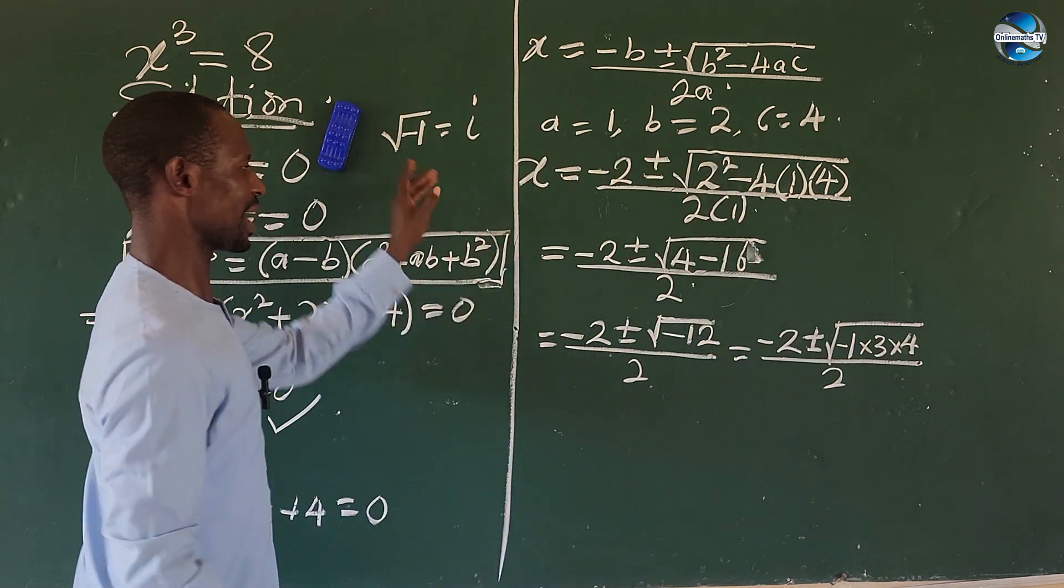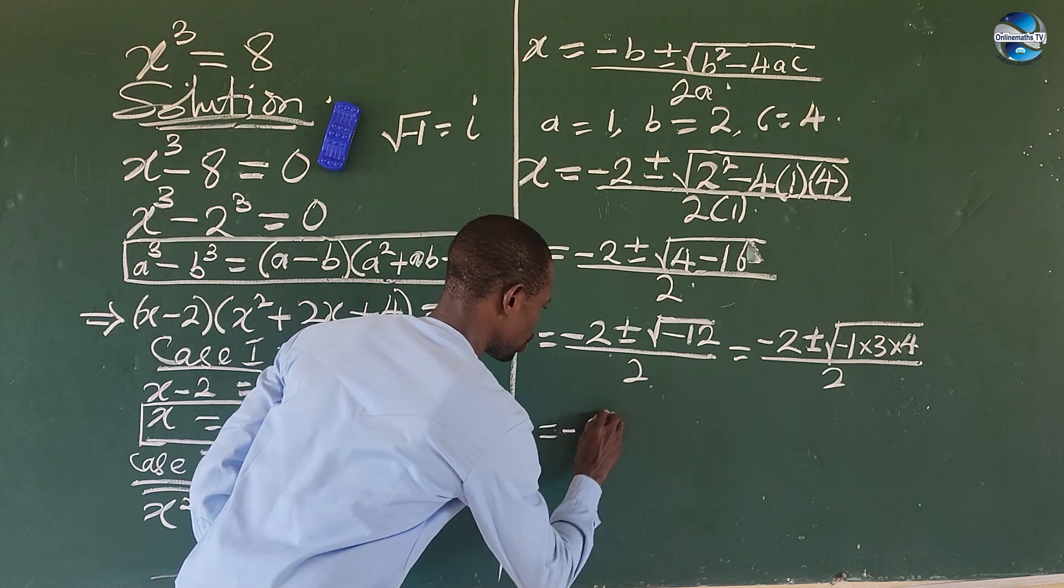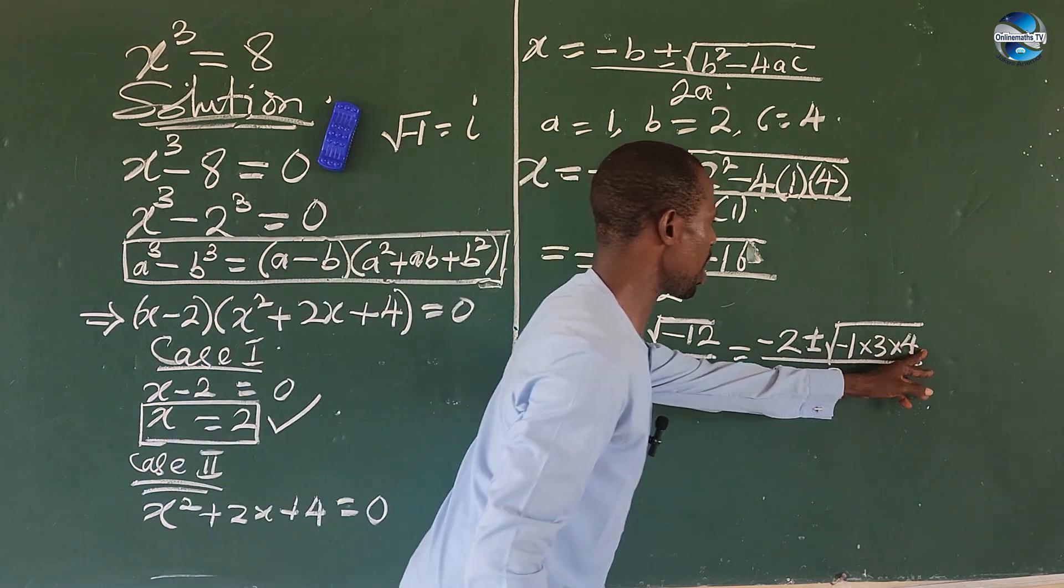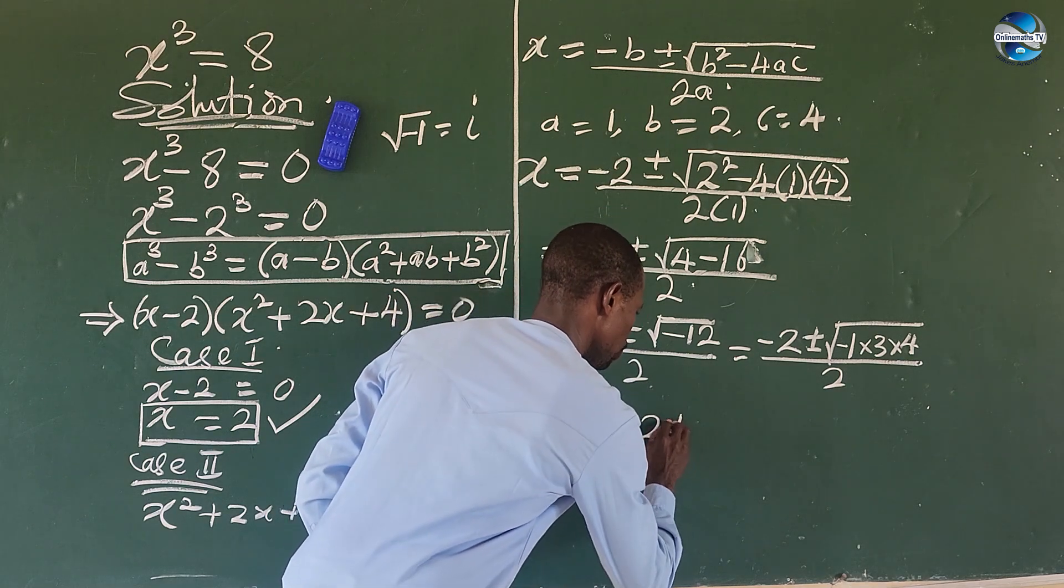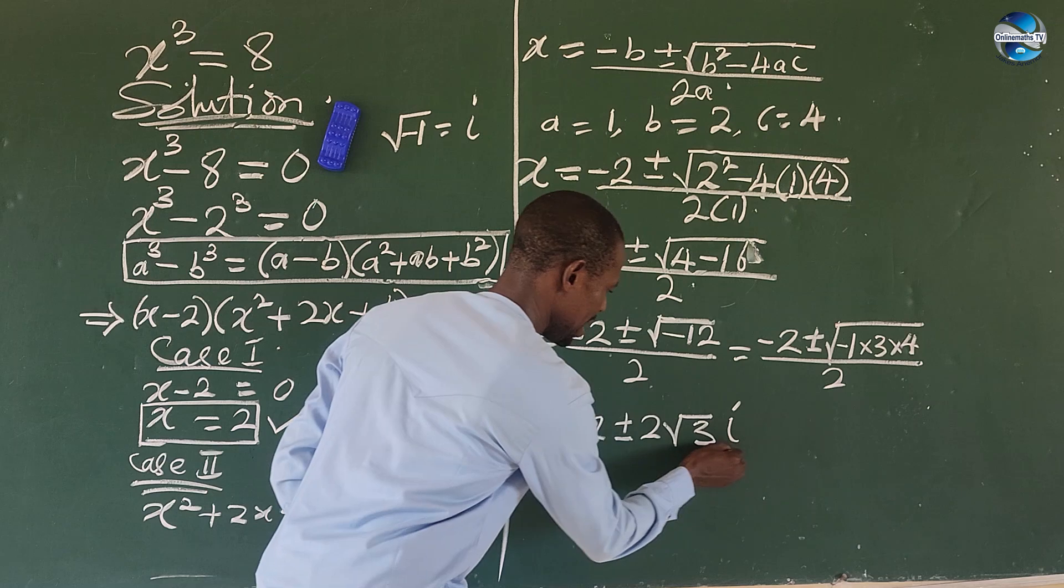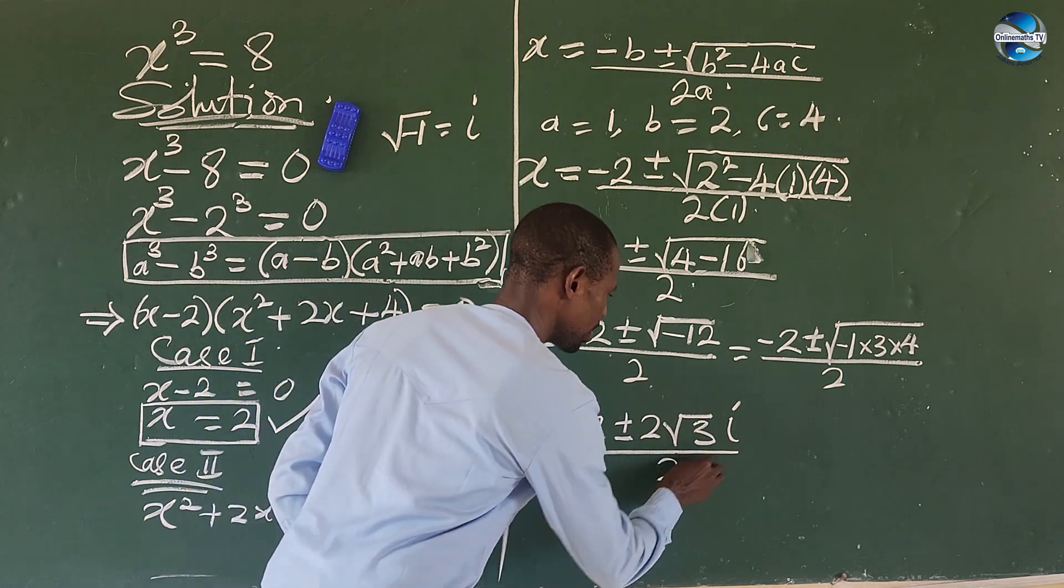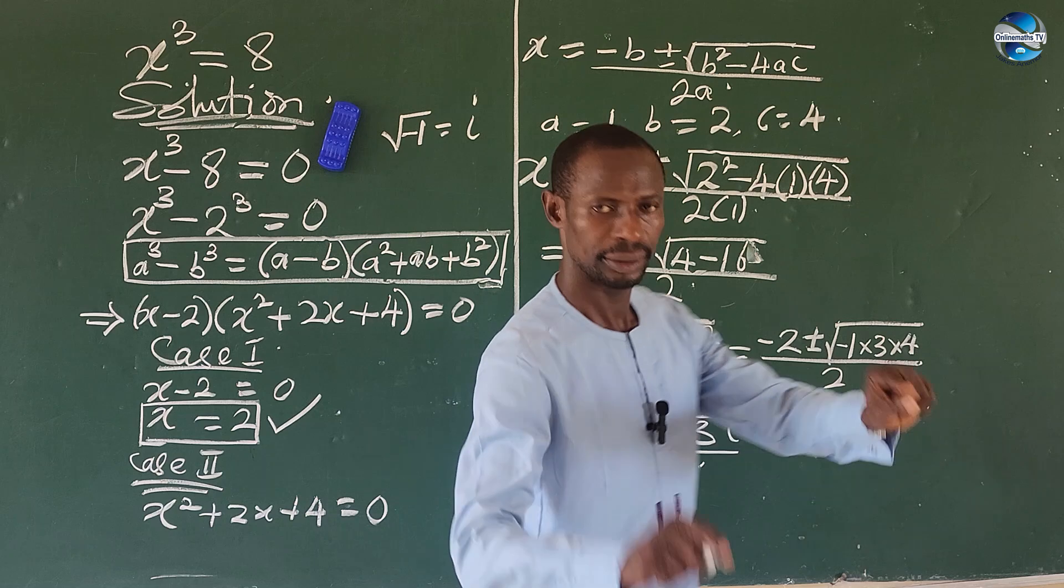So we can express the whole of this expression here as -2 ± √(-1 × 3 × 4) all over 2. Bringing our iota into the square root term, then we're going to have this to be -2 ± 2√3·i all over 2.